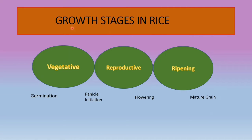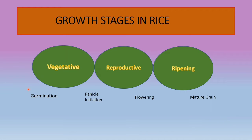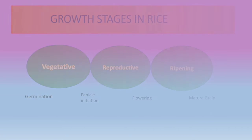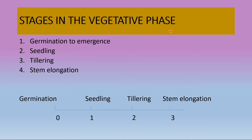After the flowering stage, the plant enters the ripening period, which follows milk stage, dough stage, and mature stage. In summary, the three main stages are vegetative, reproductive, and ripening. The vegetative phase includes germination, seedling, tillering, and stem elongation. The reproductive stage covers panicle initiation to flowering, and flowering to mature stage covers the ripening period.